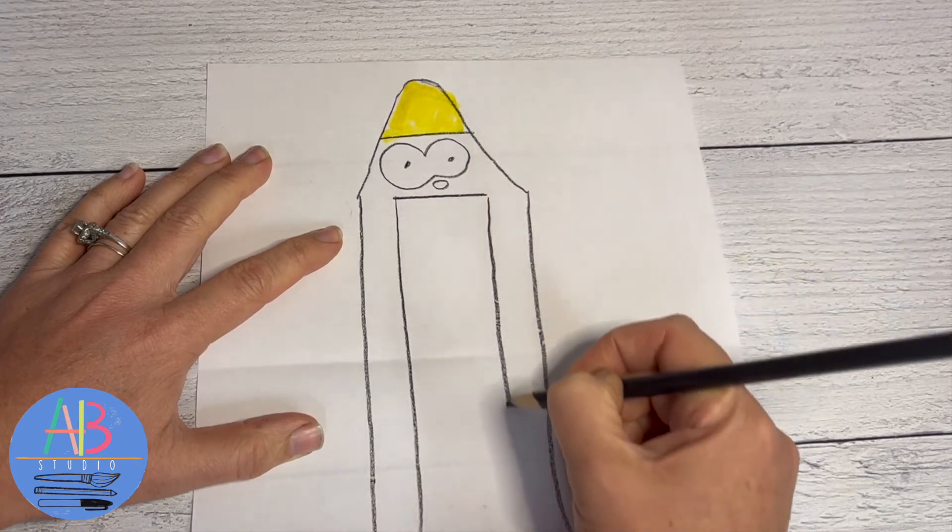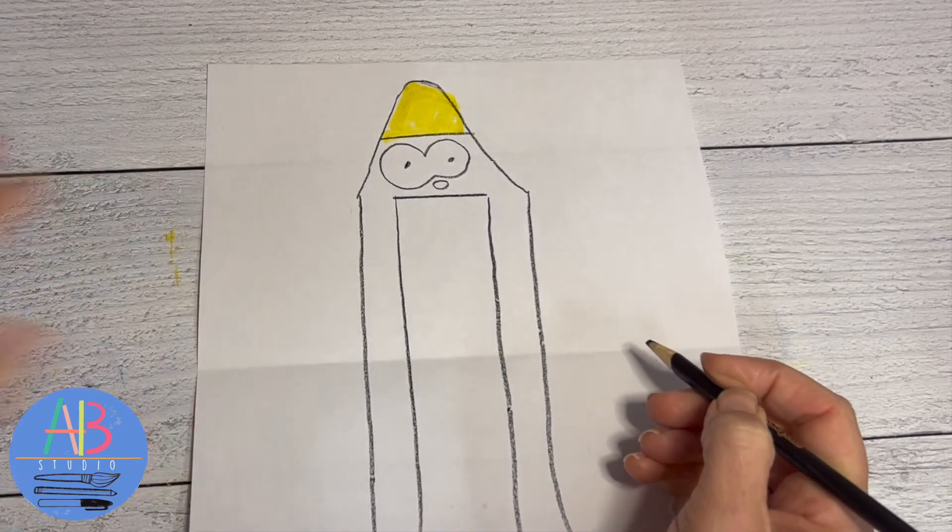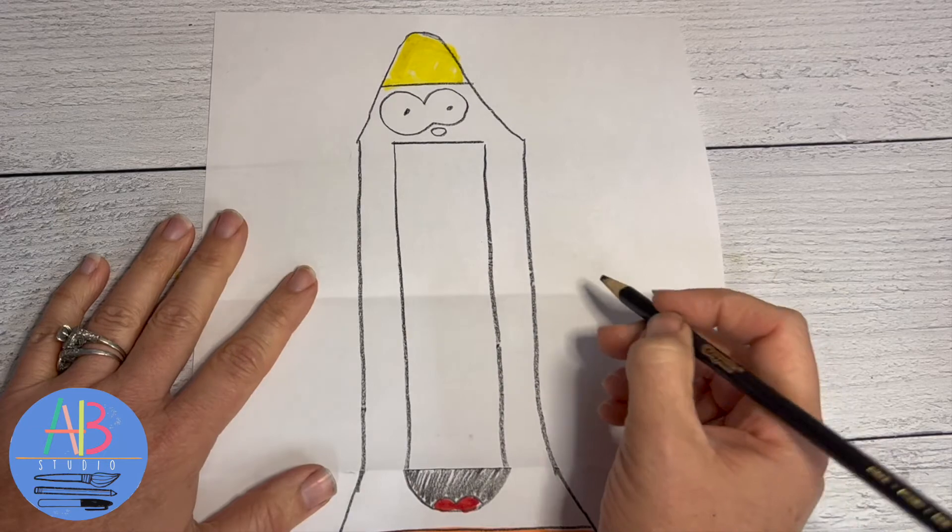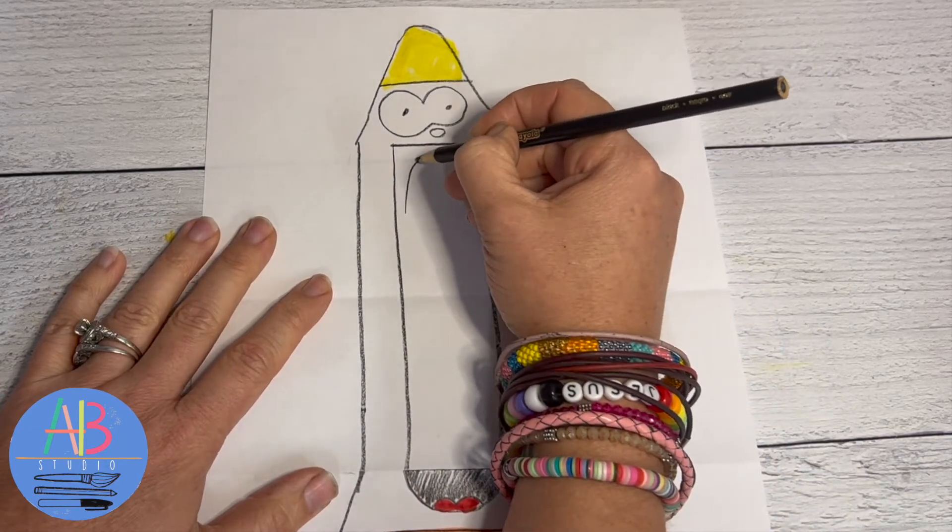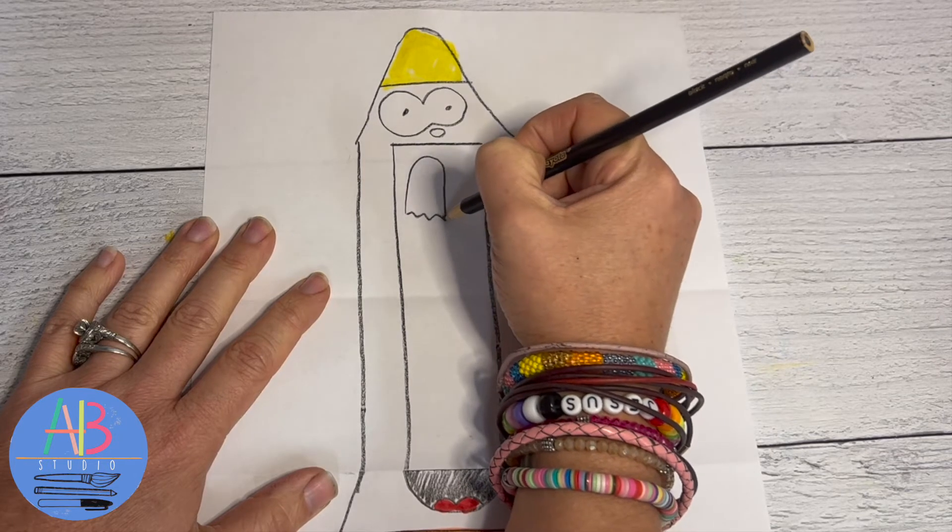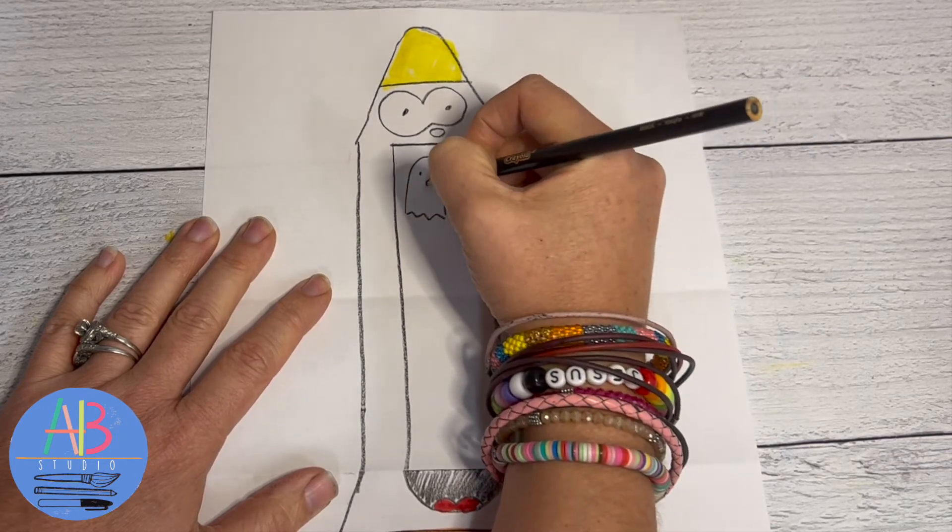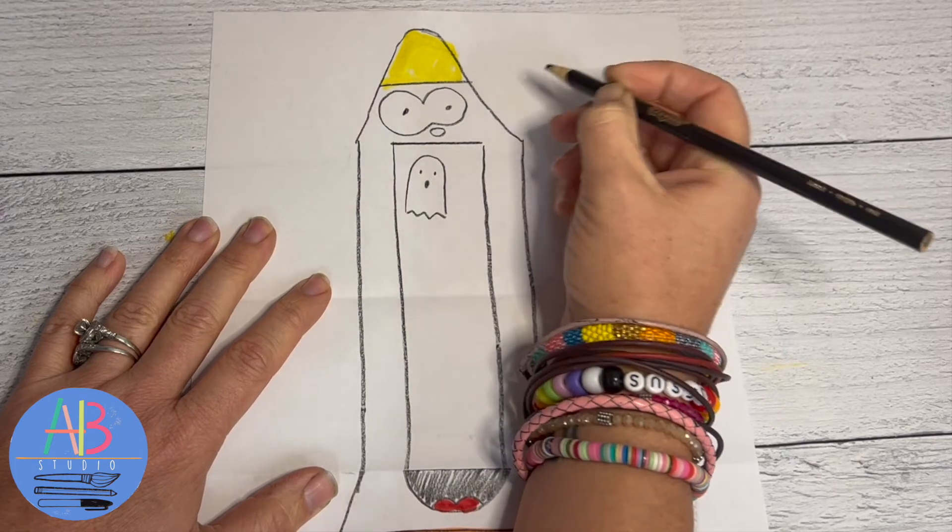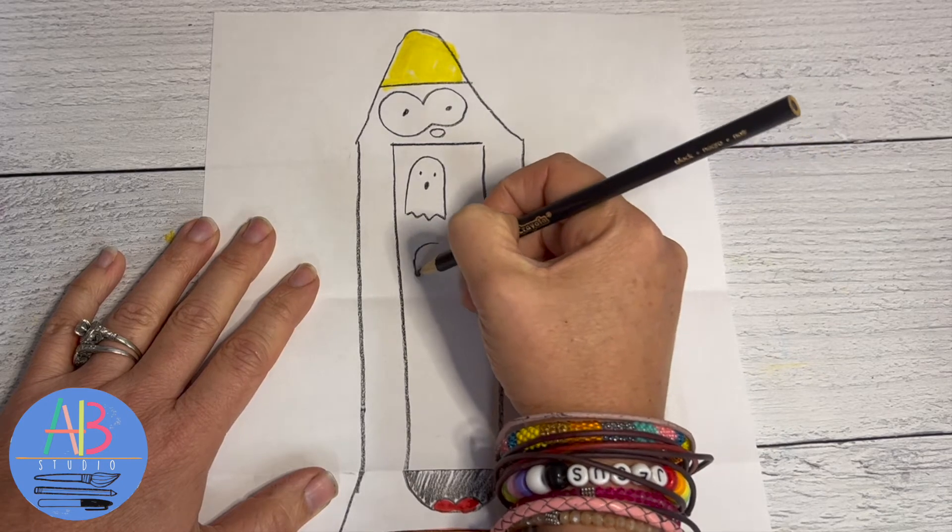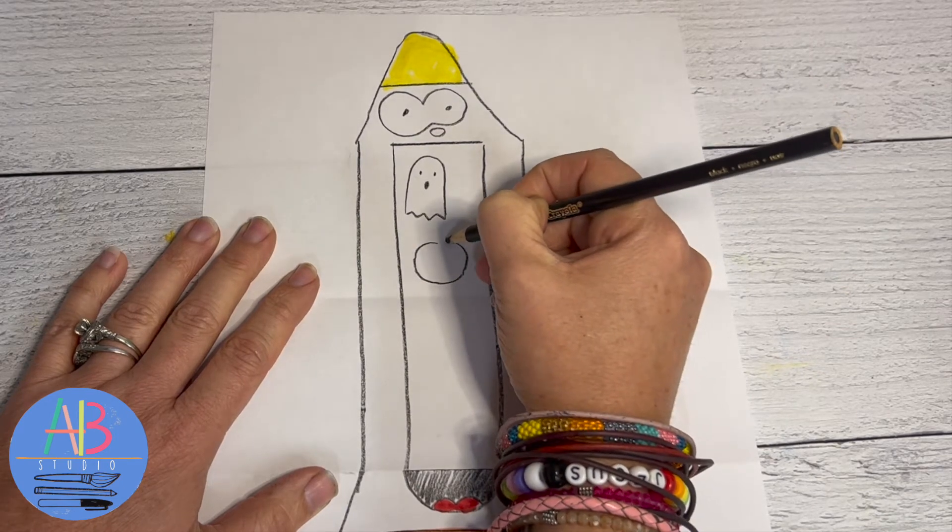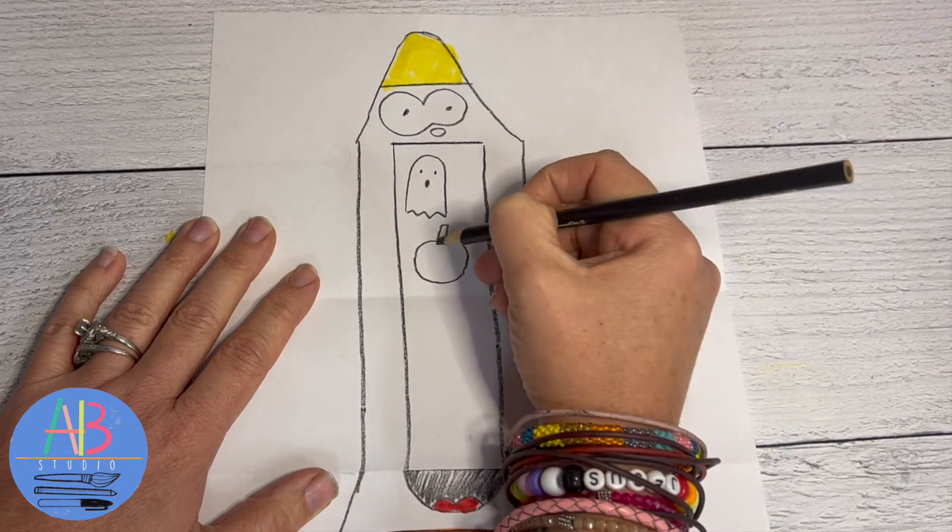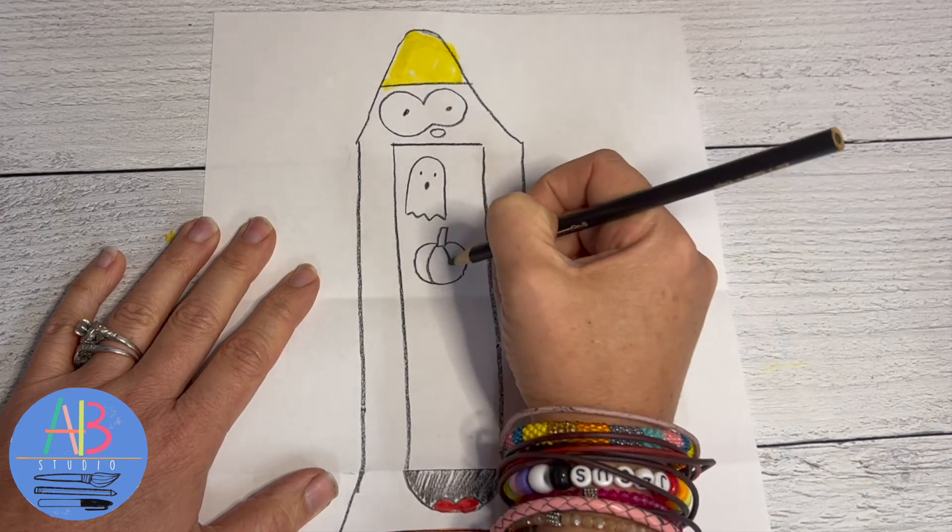Inside our candy corn's mouth I'm just gonna draw different Halloween pictures like a ghost - you do upside down U, zigzag, and then a dot dot and a little O. What about a pumpkin? So let's do circle but don't close it, make your rectangle stem and draw some curves. I've got a bone - hump hump, straight line, straight line, hump hump.